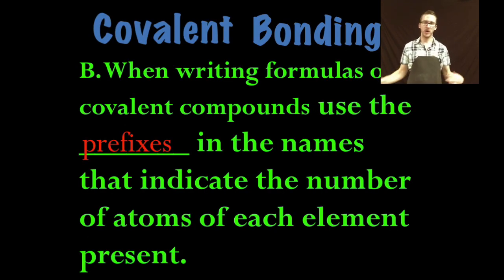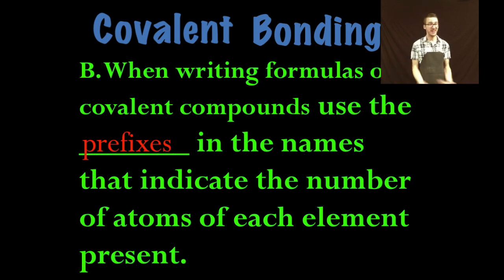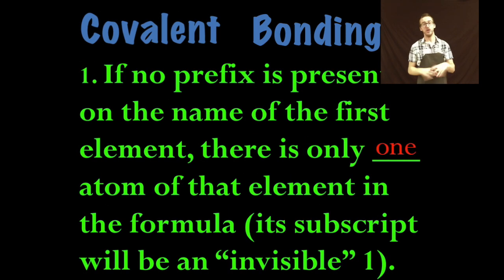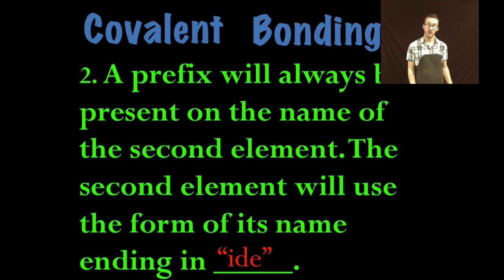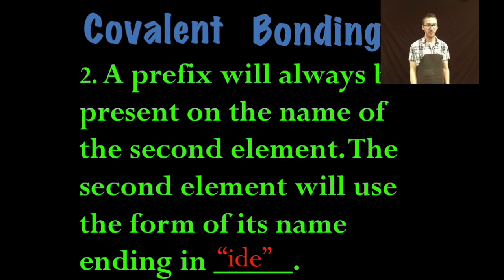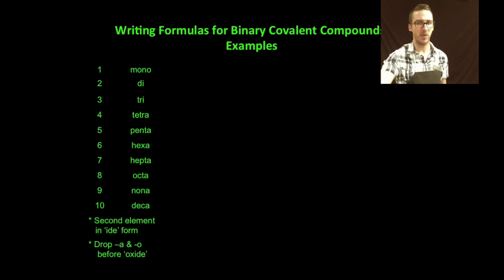Now let's talk about doing the reverse — what if we want to write the formulas? You're just going to check out the prefixes in the names that indicate the number of atoms of each element. Keep in mind that if no prefix is present on the name of the first element, there is only one atom of that element in the formula. You should always see a prefix on the name of the second element, but keep in mind that the second element will have its ending changed to -ide, so if you're looking for 'oxide' on the periodic table you're never going to find it.